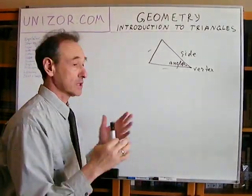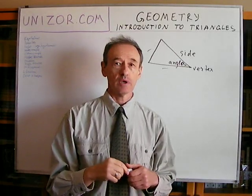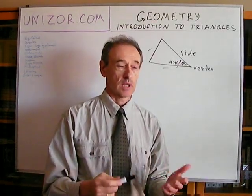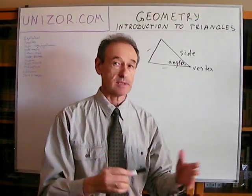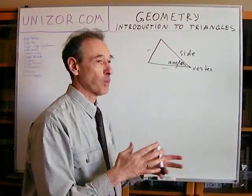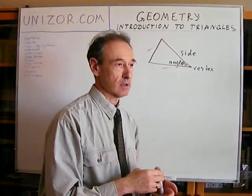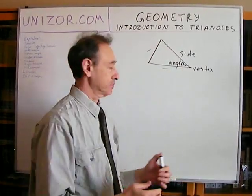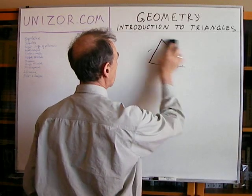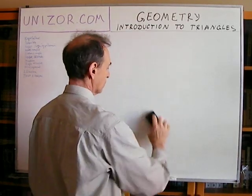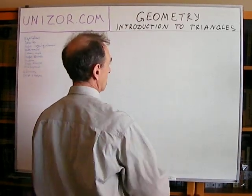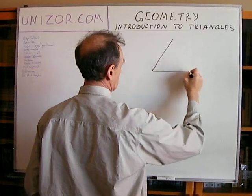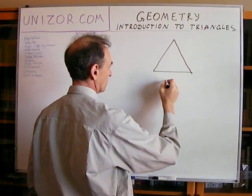Now, what kind of triangles do we consider as separate classes? There are many different ways to classify triangles. The first one is by the sides. If you have all three sides equal to each other, it's called equilateral.